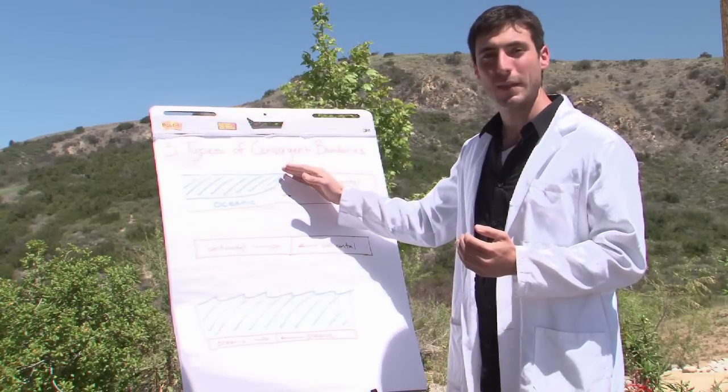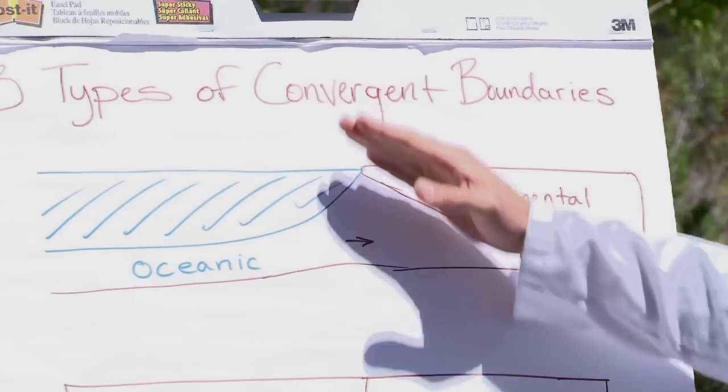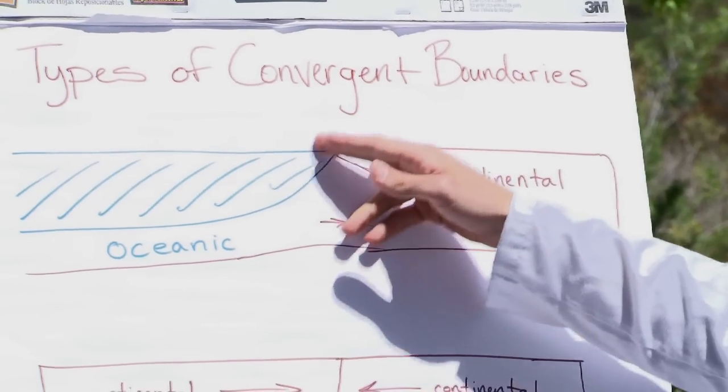The landforms that are created here, often you'll have a lot of mountains forming on the continental plate as it gets pushed up by the oceanic plate. You'll also have a lot of volcanic activity happening on the continental plate right here.